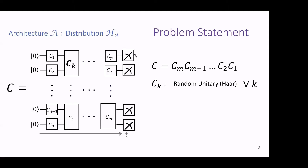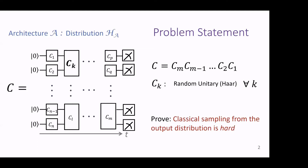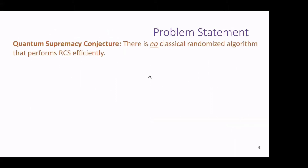Like every other quantum computation, you start from all zeros, run the computation, measure, and interpret the results. The idea is to come up with a classical algorithm that gives you strings from a distribution — some other distribution — that mimics the distribution of the quantum computer very closely, meaning some small total variation distance. So you want to prove that there is no classical randomized algorithm that efficiently performs random circuit sampling — that is, provides samples from a distribution close to the distribution of the quantum circuit.